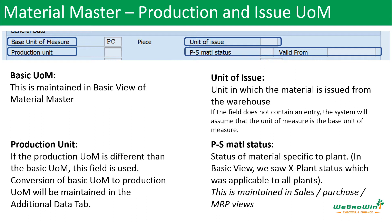The relation between basic unit of measure and the production unit is maintained in the additional data tab when creating the material master. There is also a field called unit of issue — this is the unit in which material is issued from the warehouse. For example, wires or coils may be bought in bundles, but when issued to production, they will be issued in feet or meters. If you don't maintain the unit of issue or production unit, the system will assume the basic unit of measure as the basis for all these details.